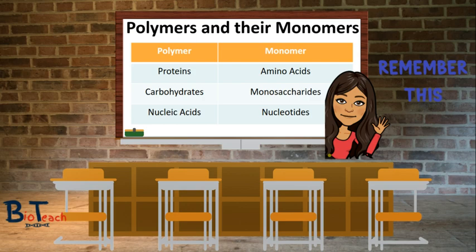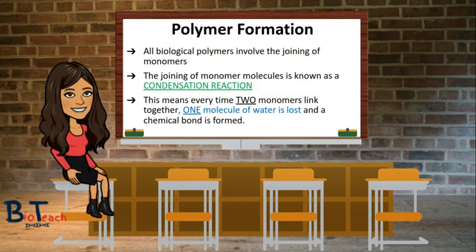There are a whole other set of videos that I'll post up later which detail each of these examples, so I won't spend too much time on them in this particular video. You need to be able to describe how polymers form exactly. The reaction that takes place is known as the condensation reaction. This means when the functional groups of two monomers form a bond, there is a molecule of water released by the reaction.